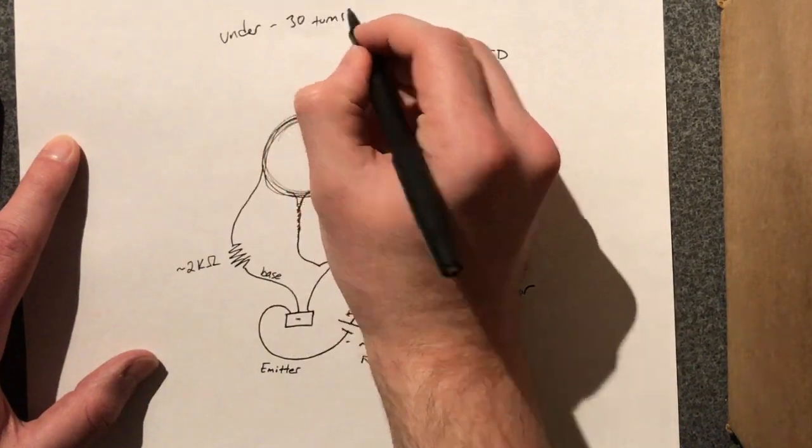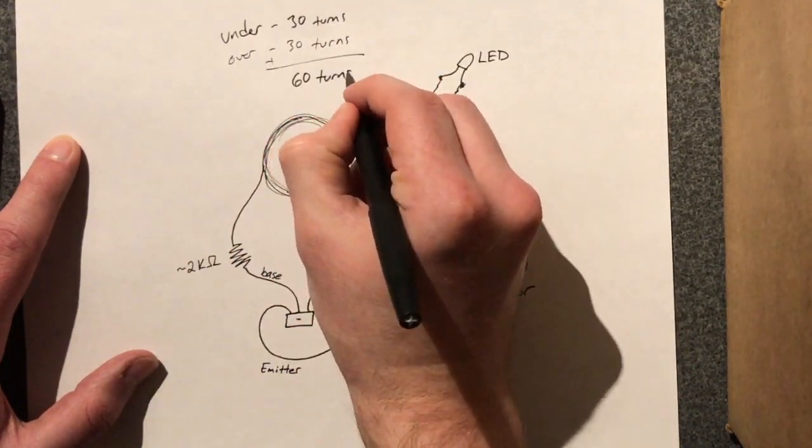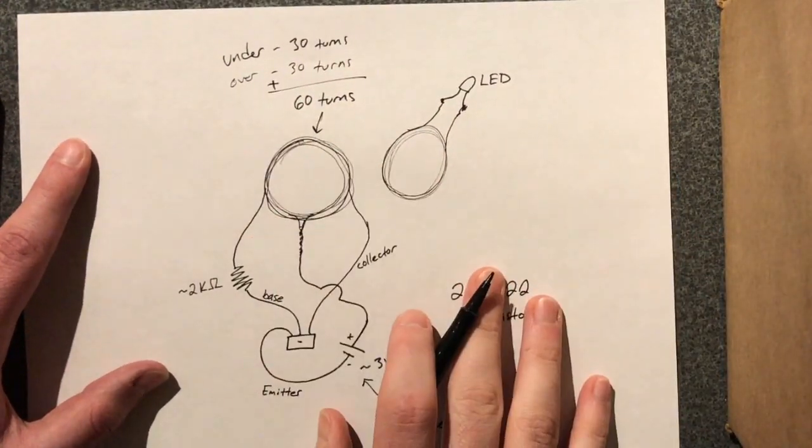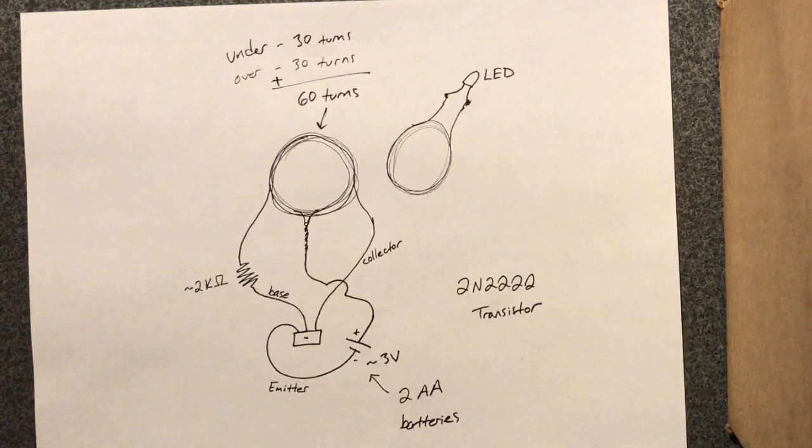So like I said, that coil is in the middle. So underneath it is 30 turns, and then that comes out and on top of it is 30 turns. So together you have a 60 turn coil.